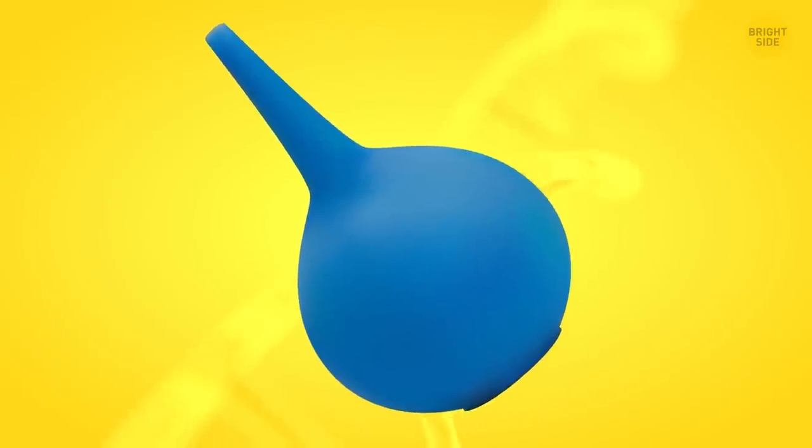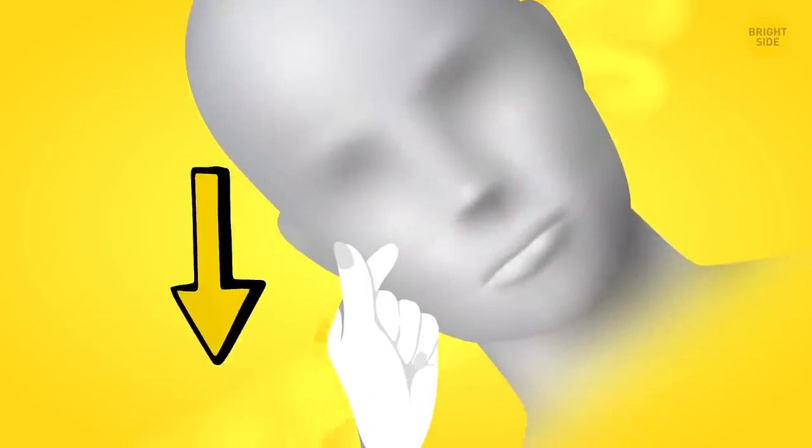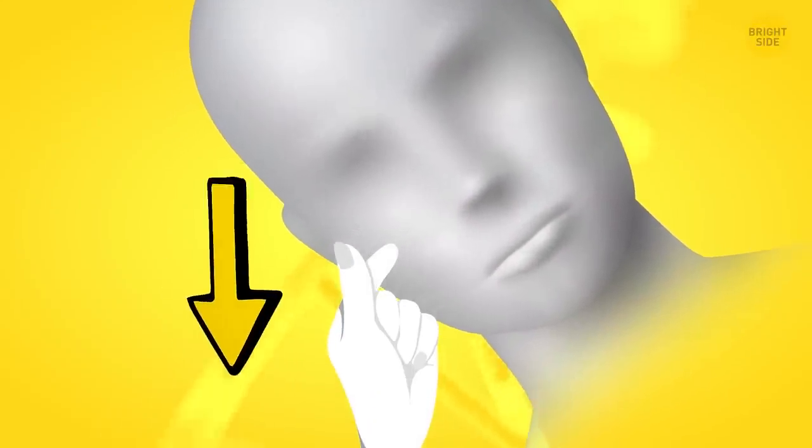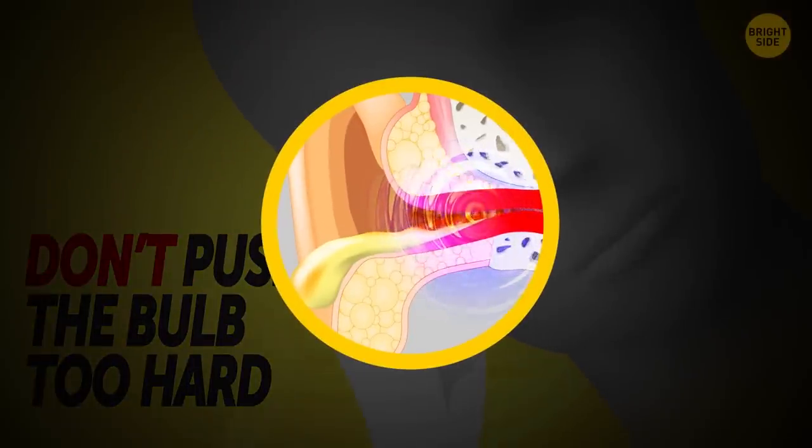Then, take a rubber bulb, fill it with warm water, and very carefully rinse your ear canals with it. Tilt your head to the side and pull your earlobe down for better access. Don't push the bulb too hard, or you'll end up with water stuck in your ear. When done rinsing, tip your head to the other side and let the water out. Repeat with the other ear.